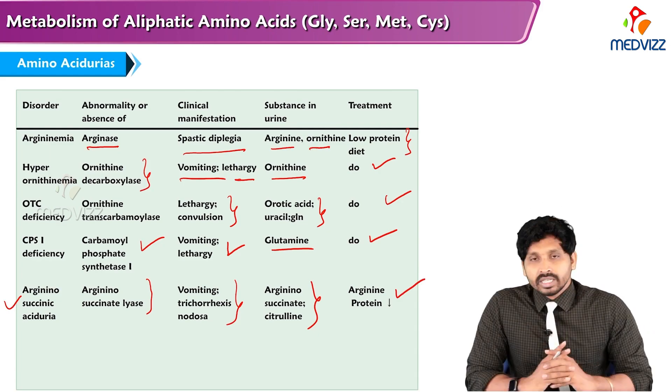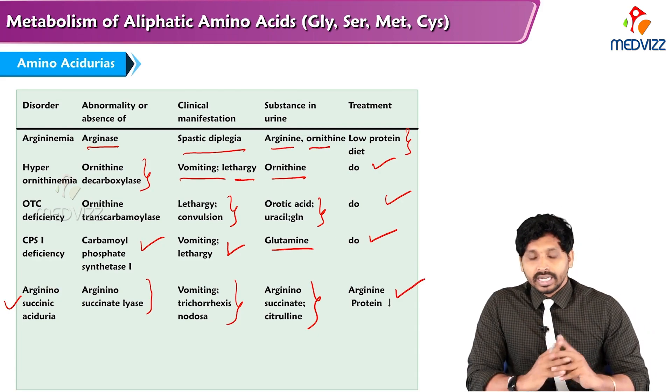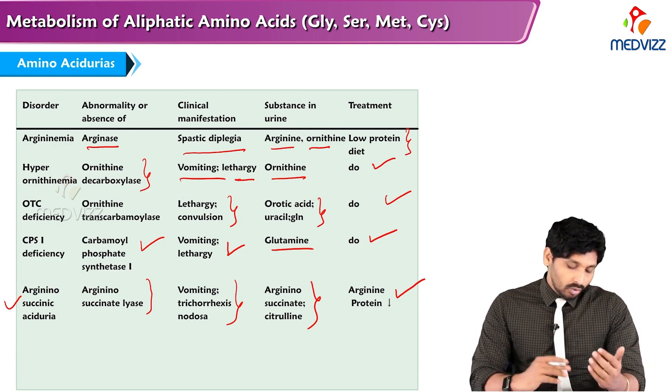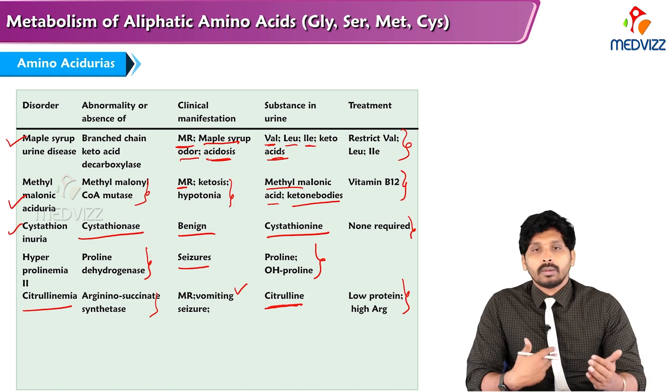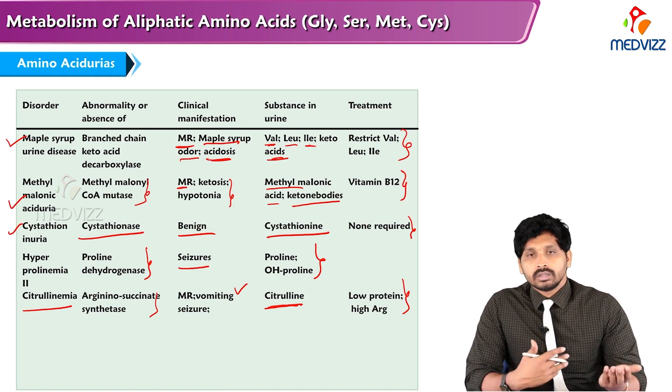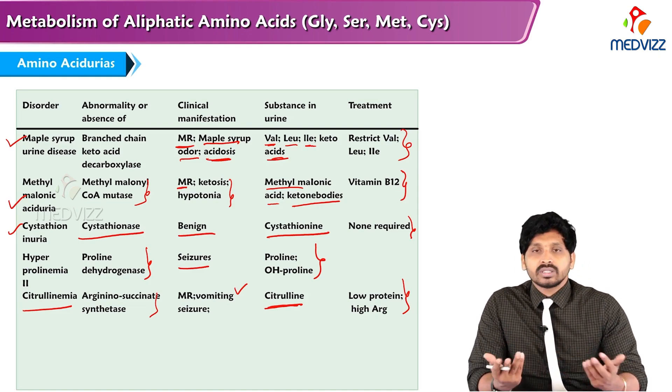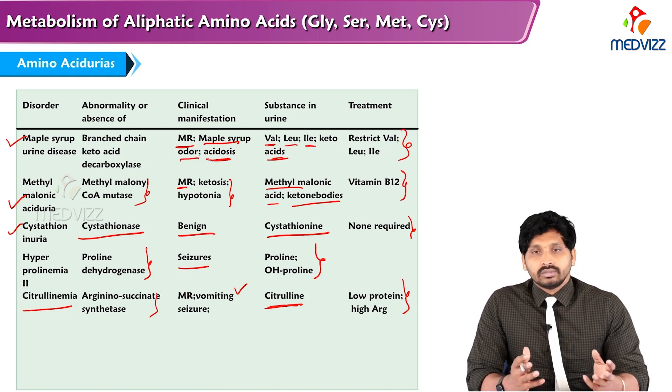That's all about amino acidurias — different types including urea cycle disorders and different types of amino acid metabolic defects. Thanks for watching.